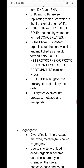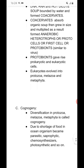Protobionts gave rise to prokaryotic and eukaryotic cells. Eukaryotes evolved into protozoa, metazoa, and metaphyta. Cognogeny: diversification in protozoa, metazoa, and metaphyta is called cognogeny. Due to shortage of food in the ocean, organisms became parasitic, saprophytic, chemosynthesizer, photosynthetic, and so on. Thank you.